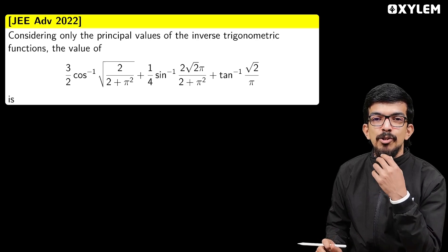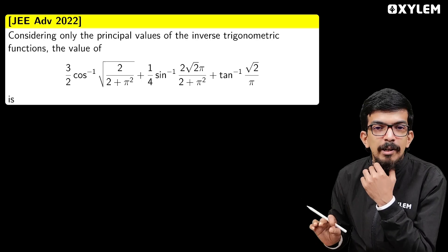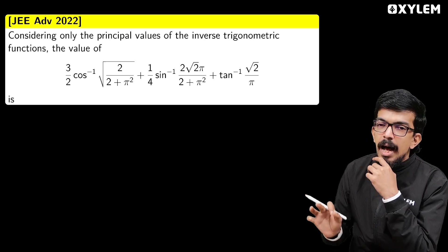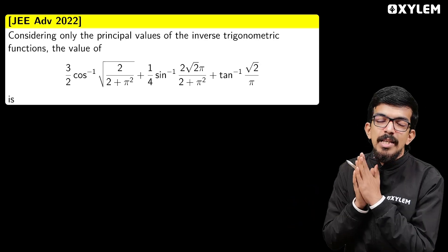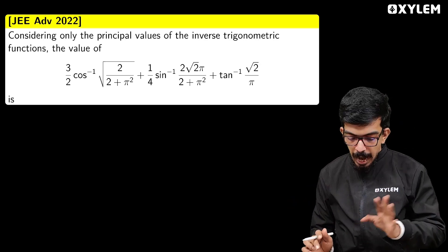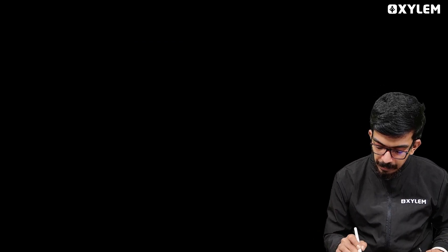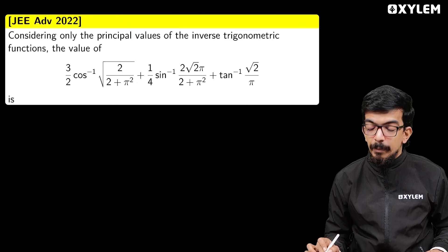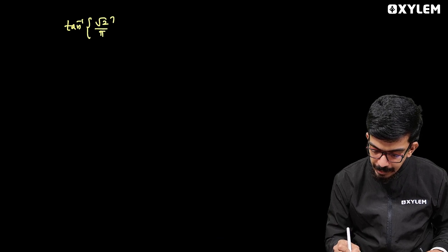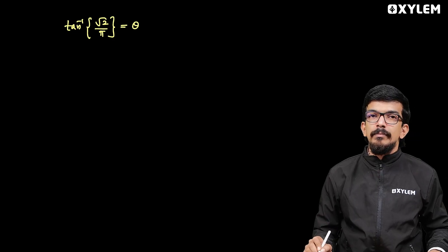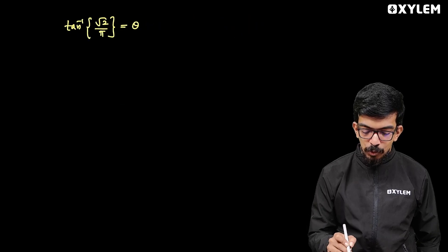Tan inverse, sin inverse 1/2 — that's not individuality. The time we start, the time we are going to do a simple expression, we will do simplification. I don't know how to do simplification, but then we will do it. The expression: tan inverse of √2 divided by π, which we will call theta.